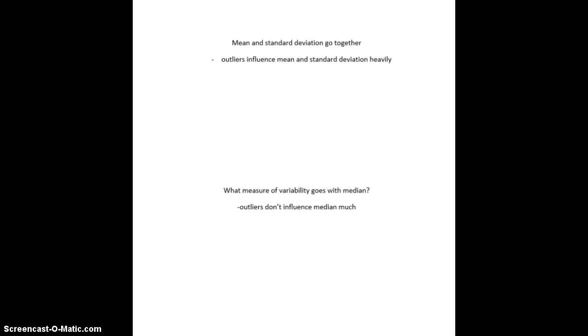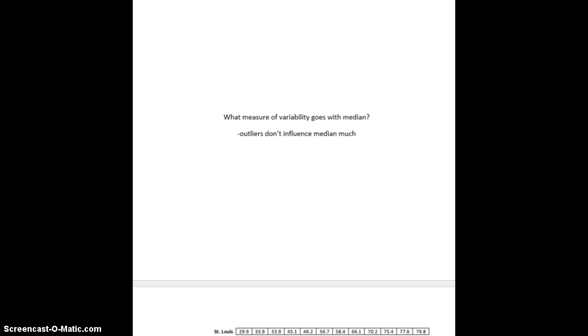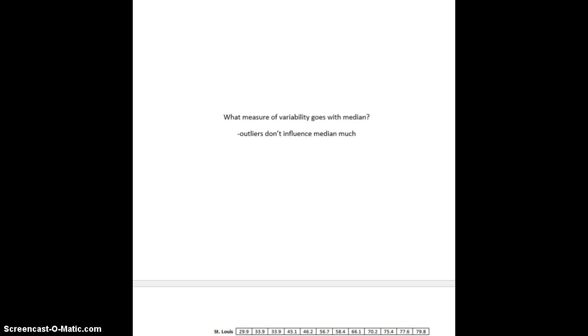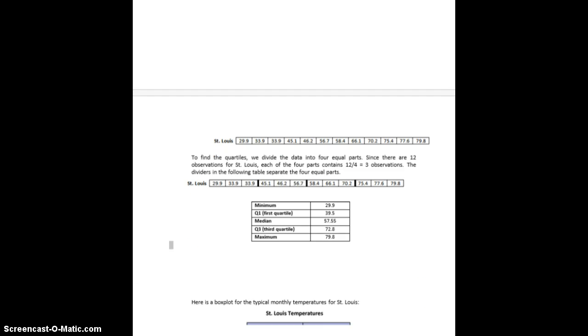Mean and standard deviation go together. Now, we also saw before with that example that had the number 100 in it, outliers, numbers far away from the others, influence the mean and the standard deviation heavily. So, if we have an outlier, we're not probably going to want to use the mean. What else can we use for the center? We talked about using the median. What measure of variability goes with the median? We're going to want something so that the outliers don't influence the median very much. So, what we're going to look at next.